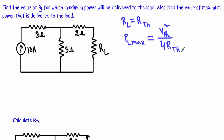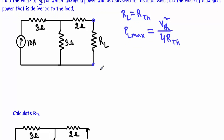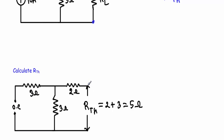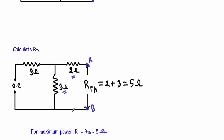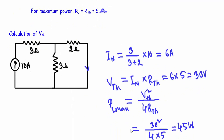First, I will calculate the Thevenin resistance of the circuit. I have to remove RL across terminal A and terminal B and calculate RTH across these two terminals. Since we have a current source here, we replace it with an open circuit. As this side is open, there will be no current flow through the 3-ohm resistor. Therefore RTH is the series combination of the 2-ohm and 3-ohm resistances, giving RTH = 5 ohms. This means the load receives maximum power when RL = 5 ohms.